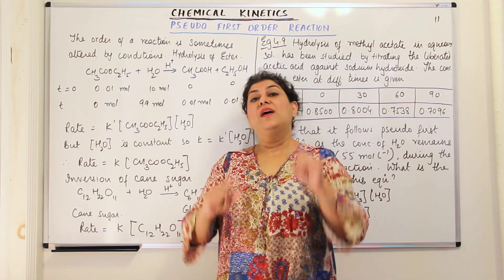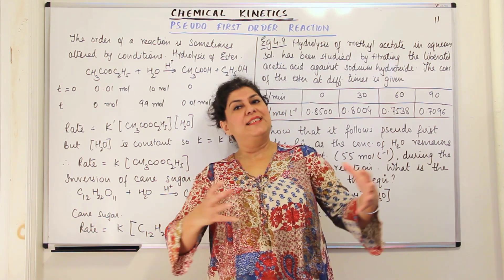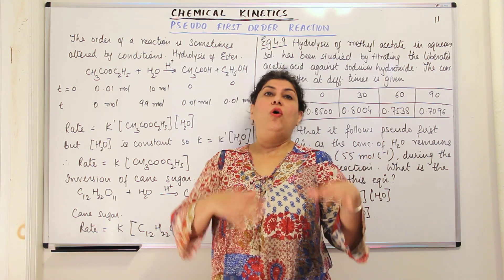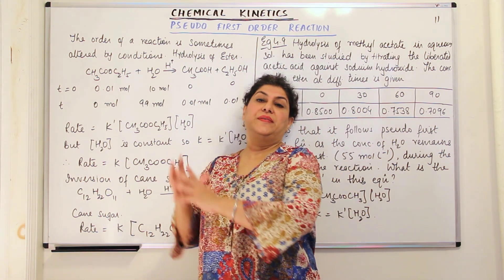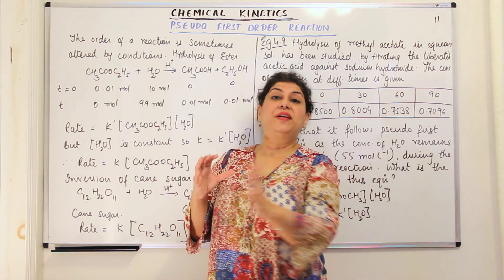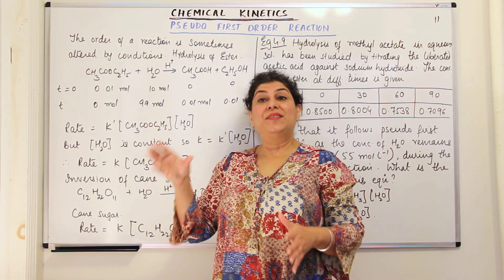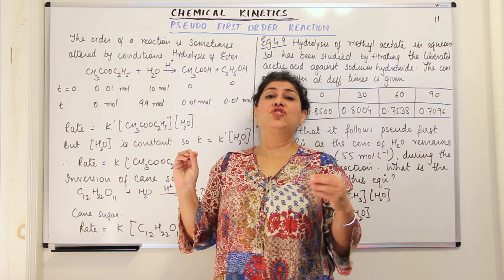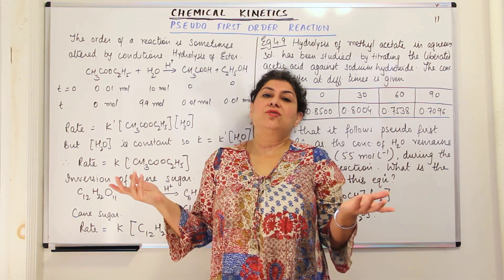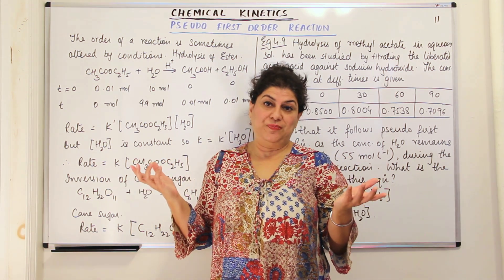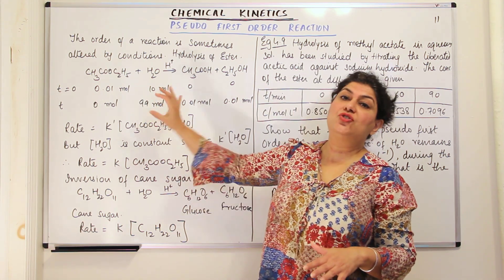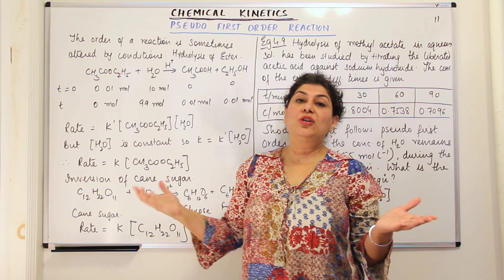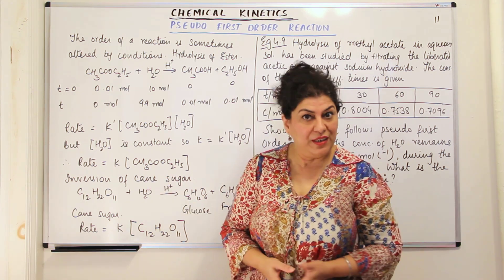That is when one of the reactants is present in such a large quantity that even during the course of the entire reaction, the change in concentration of that reactant is so small that it does not really affect the rate of the reaction. So it is said to be a pseudo first order reaction — that particular reactant is not contributing towards the rate of the reaction.